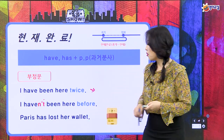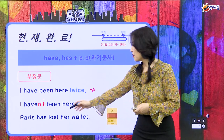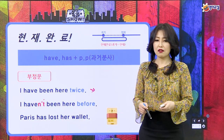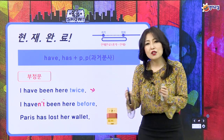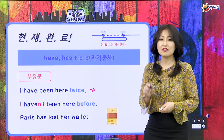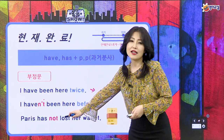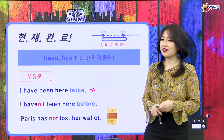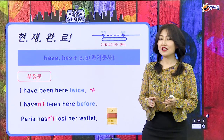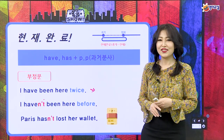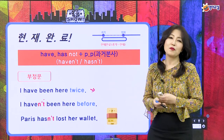Paris has lost her wallet. Paris는 has lost, 그녀의 지갑을 잃어버렸대요. 지갑을 잃어버린 건 순간인데 왜 현재 완료를 써요? 지갑을 잃어버리고 잃어버린 상태가 지금까지 계속되니까 이런 경우에는 현재 완료 시제를 쓰는 거예요. has 뒤에 not을 붙여서 Paris hasn't lost her wallet, Paris는 그녀의 지갑을 잃어버리지 않았다라는 얘기가 되겠죠.